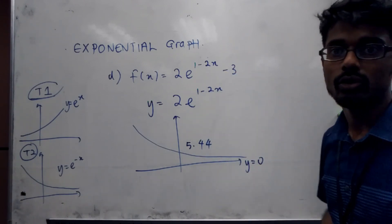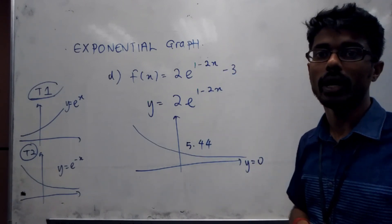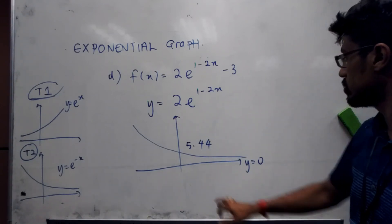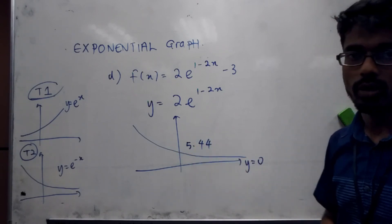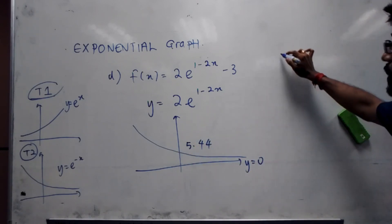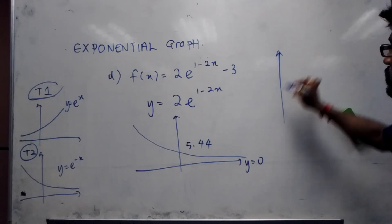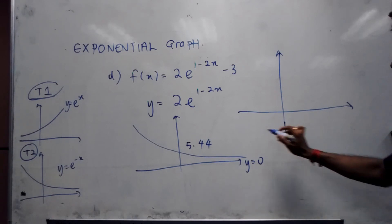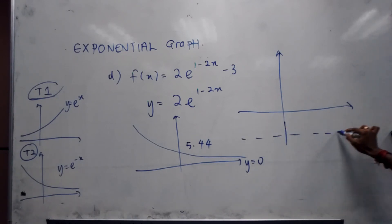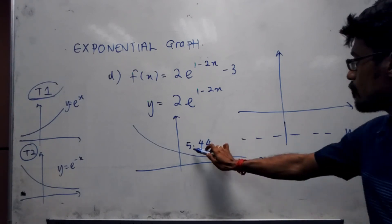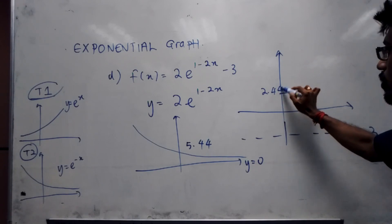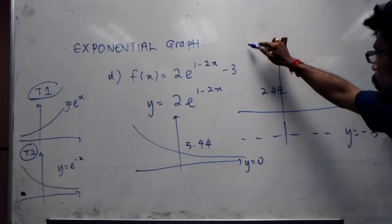We only got this minus three. So as I already highlighted to you, minus three means we're going to shift the graph down by three units. So we're just going to focus on two things, which is our y-intercept and also our asymptote. So very simple. So this is our final graph. So y equal to zero will now become y equal to negative 3. 5.44 will now become 2.44. So our shape is like that, so it would be something like this. So this is how our final graph is going to look like.